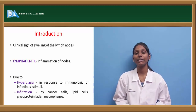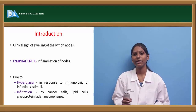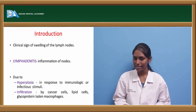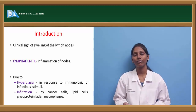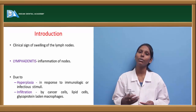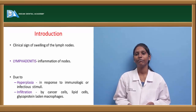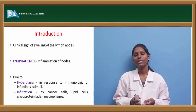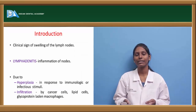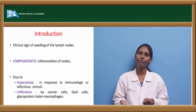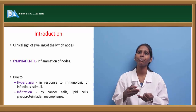One is lymphadenitis, where there will be inflammation of the nodes — 'itis' itself means inflammation. Second, there can be normal enlargement of these lymph nodes. This lymph node enlargement is due to two types: hyperplasia of lymph nodes or because of any infiltration.